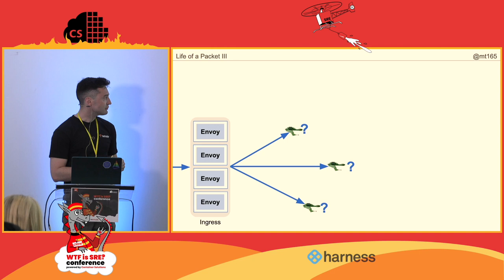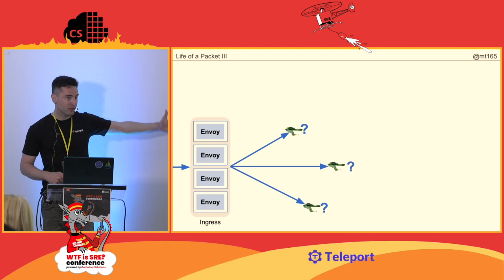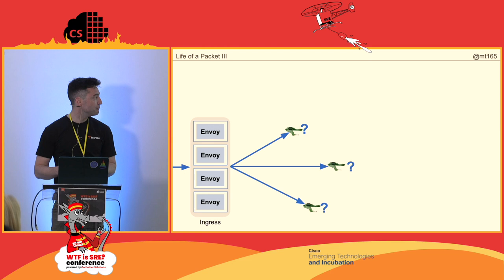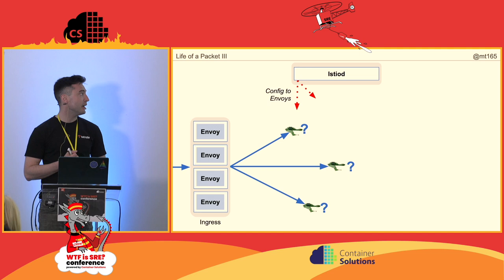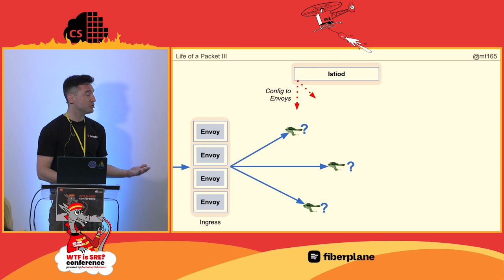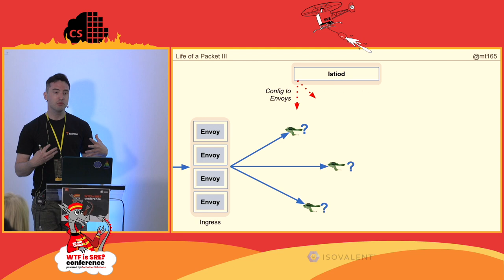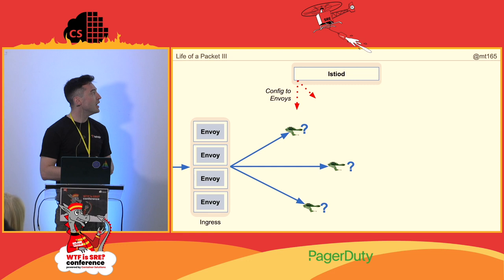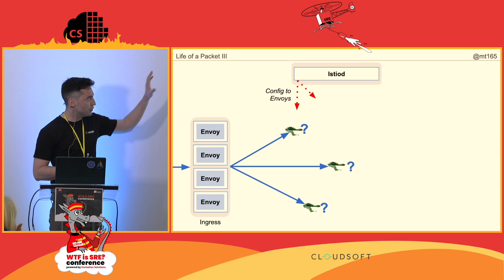Assuming we've got our edge protection sorted, we now want to call the order service. Ingress is common to all requests, but now we need to find the specific service. This is where our control plane comes in. Istio's control plane used to be several microservices — they actually backed off from microservices into one monolithic control piece for various reasons. So we have IstioD — logically and physically a single piece of code — and it sends config to all the Envoy proxies on ingress and throughout the service mesh.